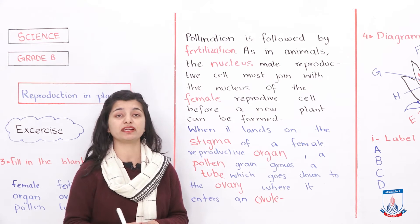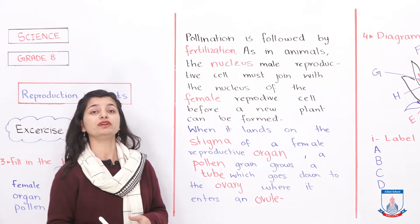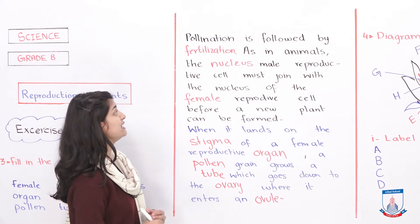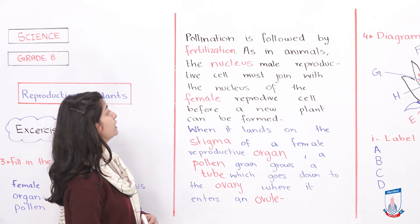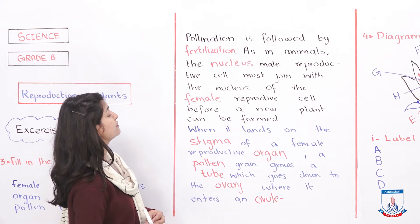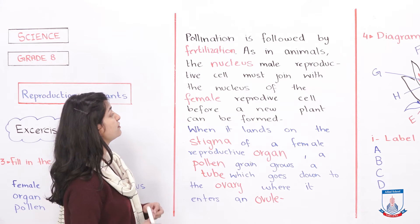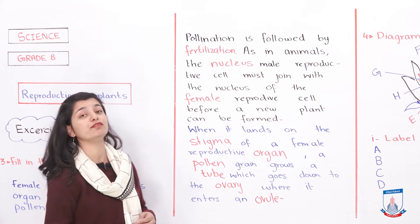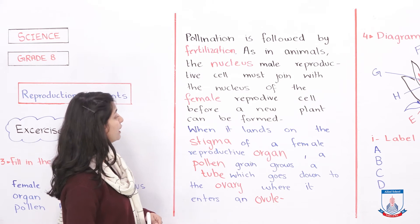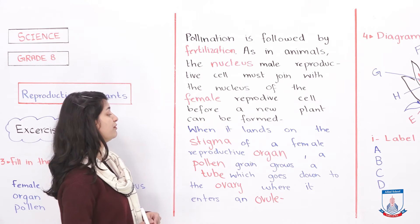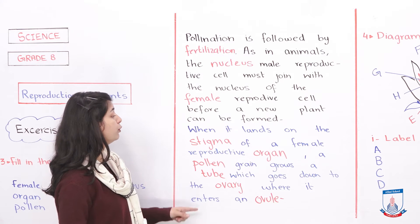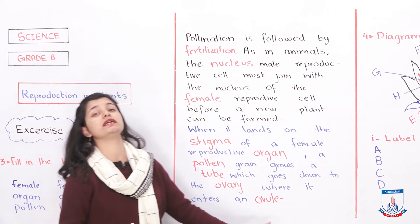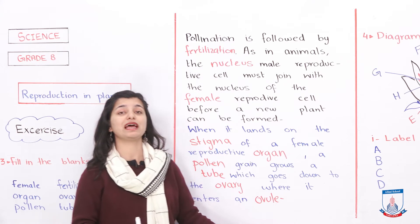Let's go through it one more time. Pollination is followed by fertilization. The nucleus of the male reproductive cell must join with the nucleus of the female reproductive cell before a new plant can be formed. When pollen lands on the stigma of a female reproductive organ, a pollen grain grows a pollen tube which goes down to the ovary where it enters an ovule — that is the whole process of fertilization.